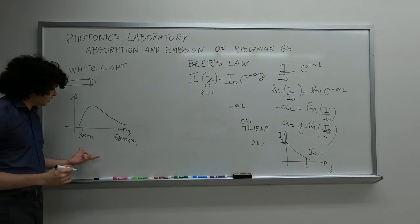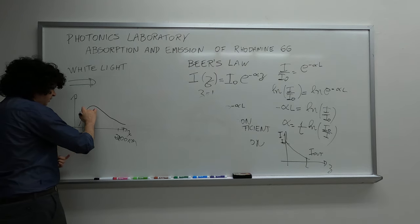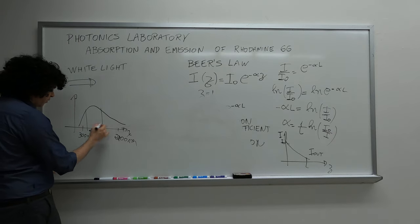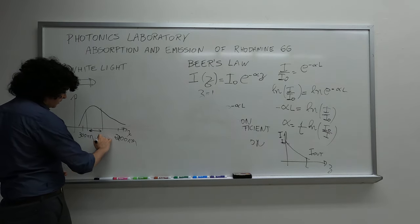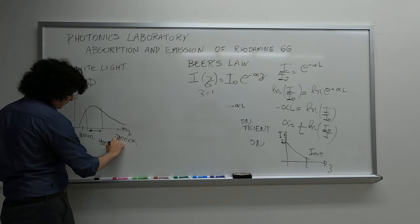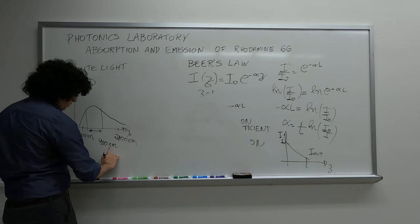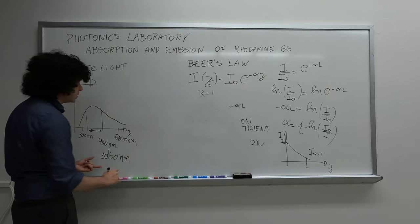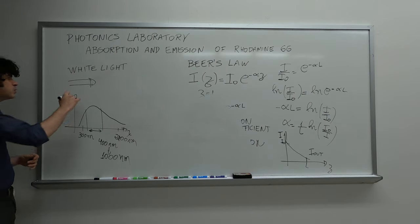The systems we measured were mostly in the visible and near infrared. So we are measuring between 400 and 1 micrometer, 1000 nanometers. So we have the white light source.